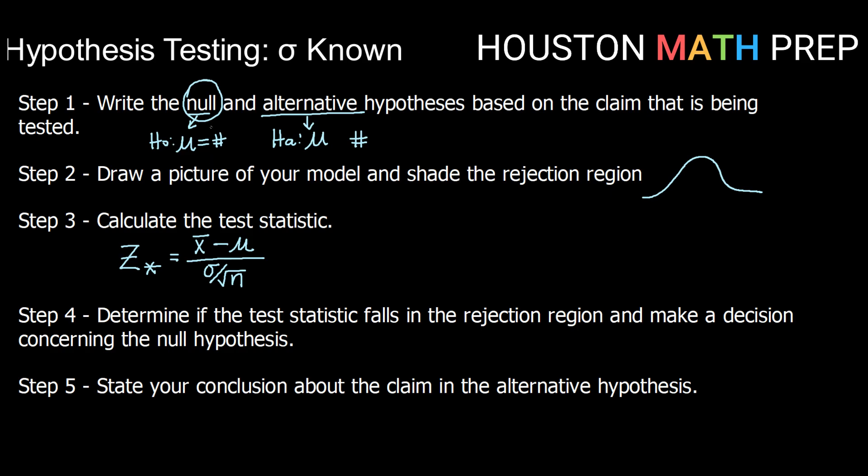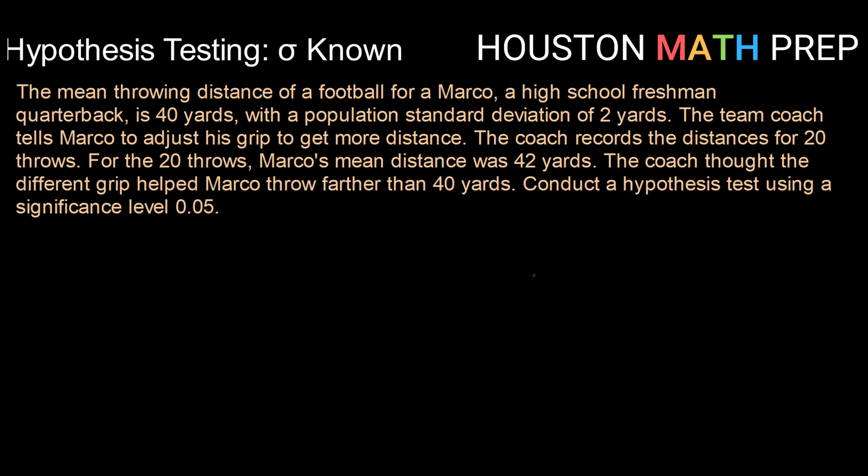So let's see this process in action with an example. The mean throwing distance of a football for Marco, a high school freshman quarterback, is 40 yards, with a population standard deviation of 2 yards. The team coach tells Marco to adjust his grip to get more distance.